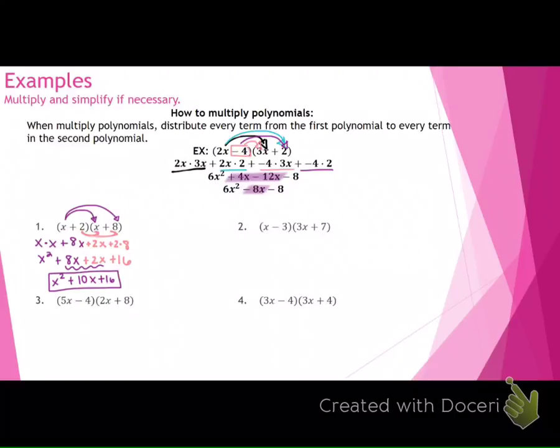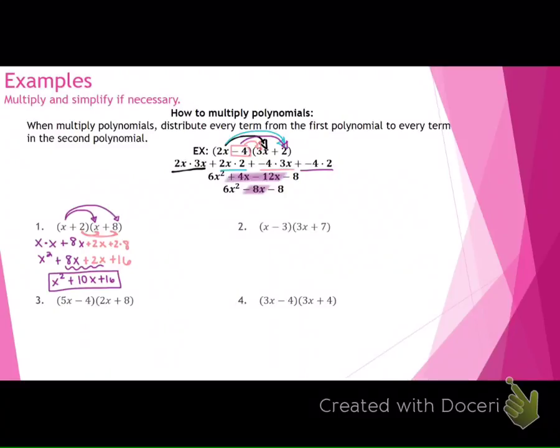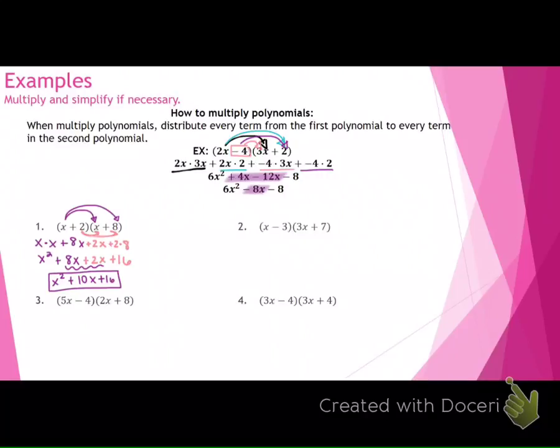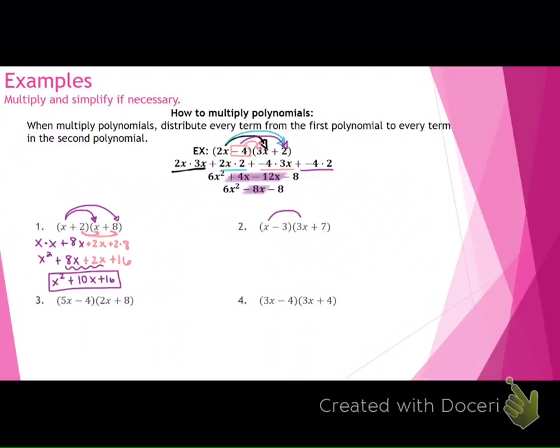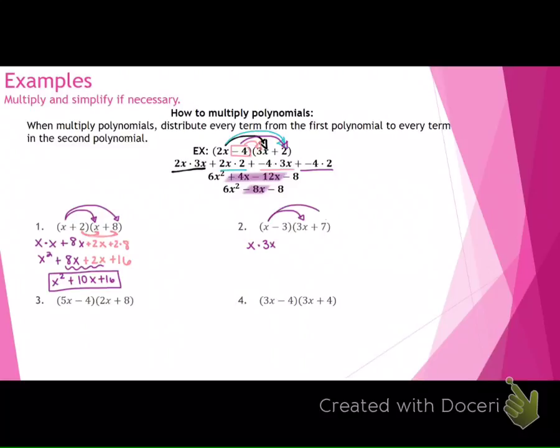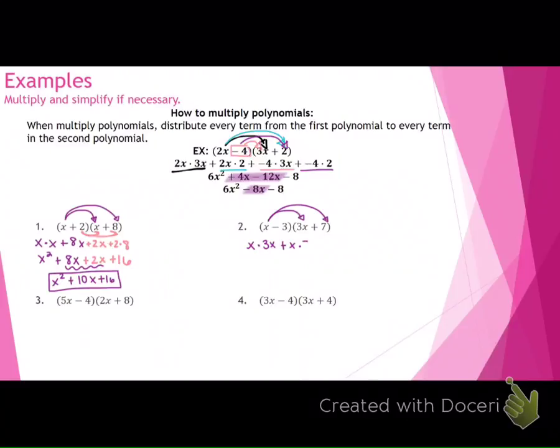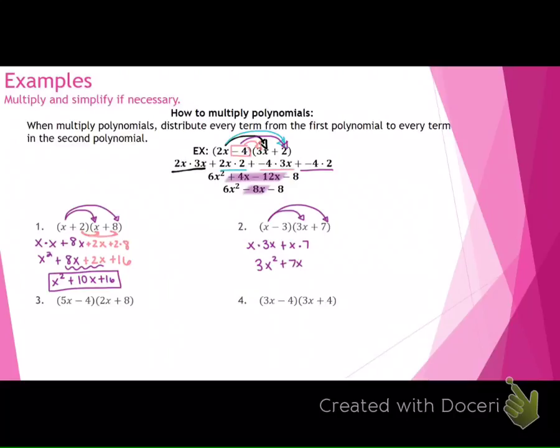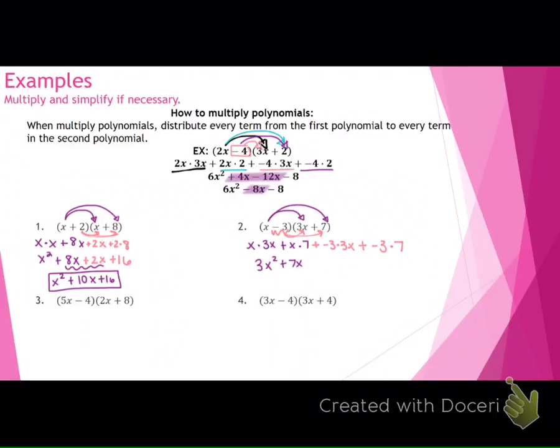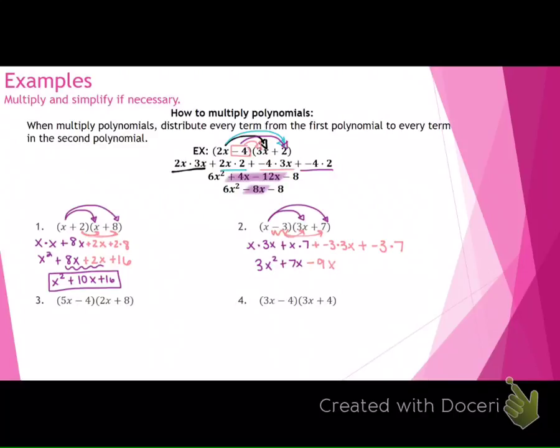Jana, let's have you try this one. Look at number 2. What would you do first? Multiply x times 3x, and then x times 7. Good. So what's x times 3x? 3x squared. And what's x times 7? 7x. Then what do you still have to do? Multiply negative 3 times 3x, and then negative 3 times 7. What's negative 3 times 3x? Negative 9x. And negative 3 times 7? Negative 21.